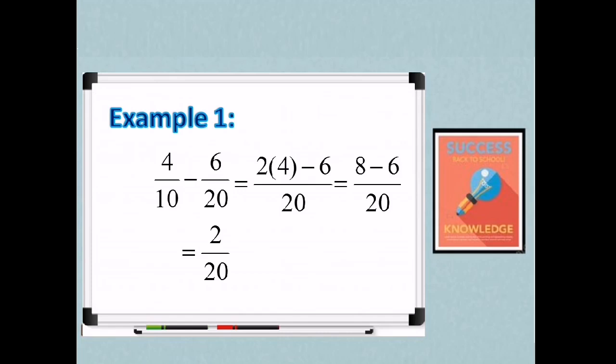And then reduce our answer in lowest term so we can write 2 as 1 times 2 and 20 as 10 times 2. So the common factor is 2. Cancelled out. Our final answer is 1/10.